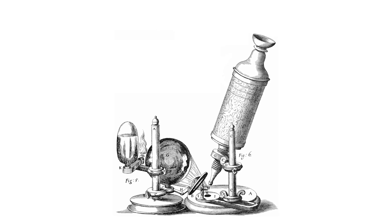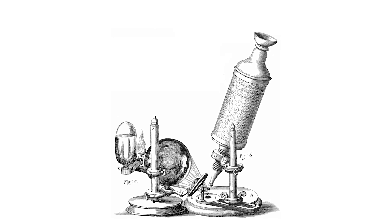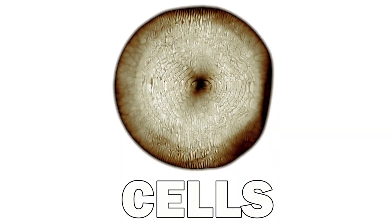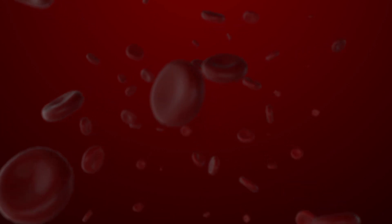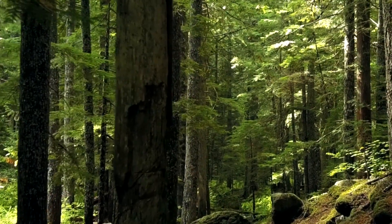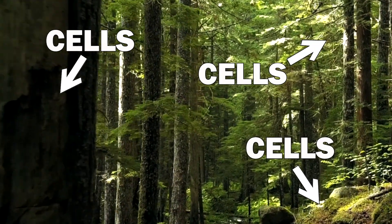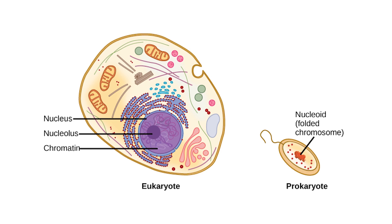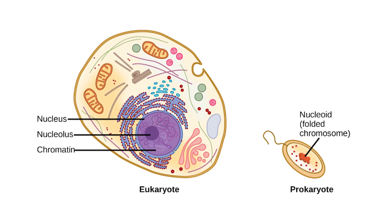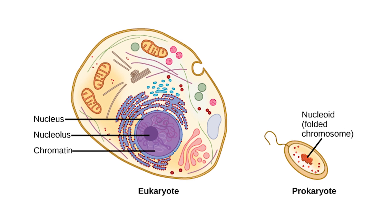In the 17th century, advancements in microscopy enabled Robert Hooke and Anton van Leeuwenhoek to discover the fundamental unit of life. They were the first scientists to describe cells. Today we know that all organisms consist of cells. From the smallest microorganism to the tallest tree, we can find cells everywhere. And although cells can look very different from each other, they all have membranes which contain a variety of different molecules.